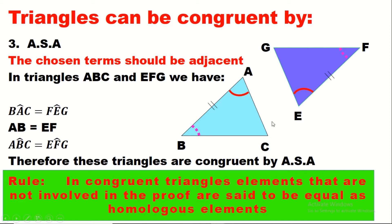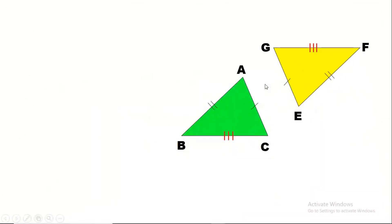Elements not involved in our proof are equal as homologous elements — we conclude them equal. In the case of Side-Side-Side, we mentioned three sides, so the remaining three angles are homologous. The angle BAC-salant is included between sides AB (equal to EF) and AC (equal to EG), so the angle formed between the equal sides in the other triangle is equal. Therefore angle GEF-salant equals angle BAC-salant as a homologous angle.